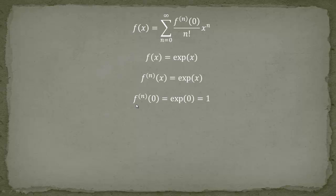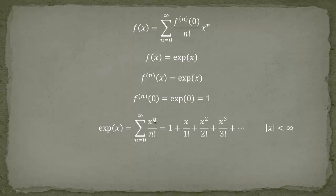Since the nth derivative evaluated at 0 is just 1, these factors are always 1. That means we are only left with x to the n over n factorial. We get this very nice-looking expression for the Taylor series of the exponential function: 1 plus x over 1 factorial plus x squared over 2 factorial plus x cubed over 3 factorial, and so forth.